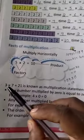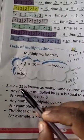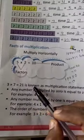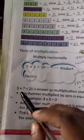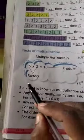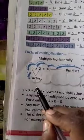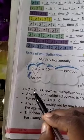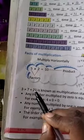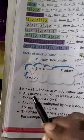For example, 3, 7s are 21. This is known as a multiplication statement or multiplication fact. 3, 7s are 21 — it is called a multiplication statement or multiplication fact.